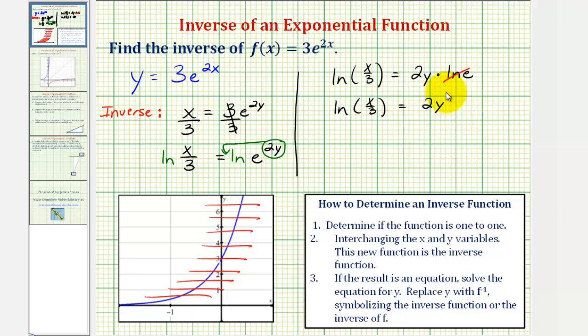So now to solve for y, we would divide both sides by 2. So we have y is equal to this quotient where y is the inverse function. So we'll use inverse function notation for y and we'll say f inverse of x equals,